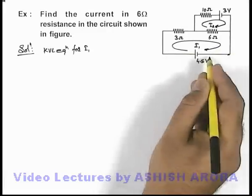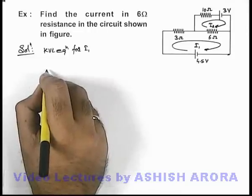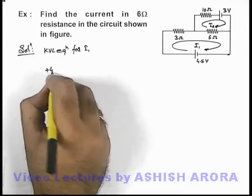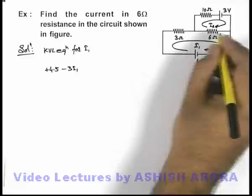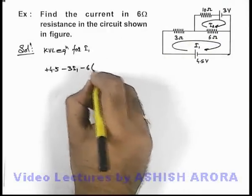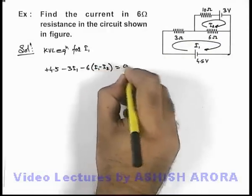If we start from this point and move along the current, we'll write the equation with the gain in potential plus 4.5, then this 3 ohm is minus 3i1, then it'll be minus 6(i1 minus i2), then it is equal to zero.